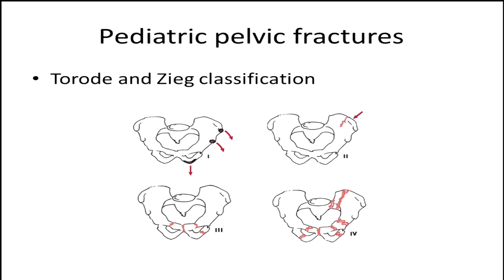Pediatric pelvic fractures are broken down simply using the Torode and Zieg classification, types one through four. Type one is associated with the least morbidity, up to type four which is associated with higher morbidity and even mortality. Type ones are apophyseal injuries — muscles pulling off the ASIS, AIIS, or ischial tuberosities. Type twos are unicortical iliac wing fractures, not through and through. Type threes are stable pelvic ring injuries, and type fours are unstable pelvic ring injuries.